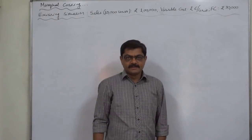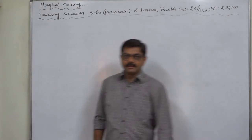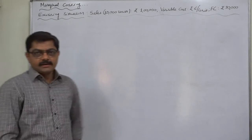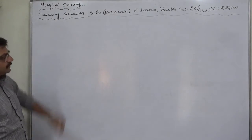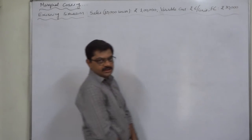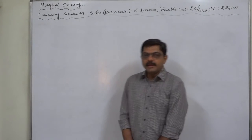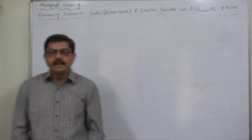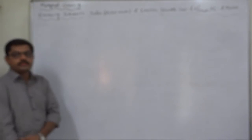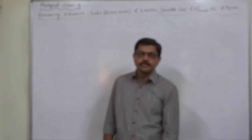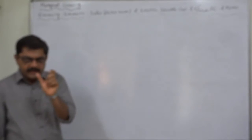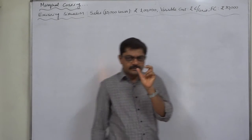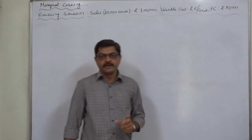Hello and welcome friends. In this lecture we are going to start the various calculations in the chapter Marginal Costing. We are starting with the very primary concepts of contribution per unit, break-even point, profit volume ratio, margin of safety and primary level concept of profit planning.